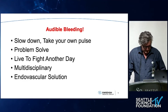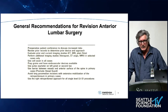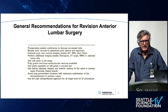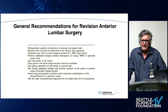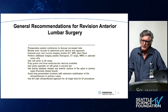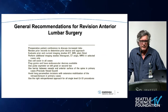If you're going to do revision anterior lumbar surgery, make sure you plan adequately. Think about putting in ureteric stents. Consider an endovascular wire in the left iliac vein. Have blood available and use a cell saver. Make sure the anesthesiologist knows what you're doing. Planning ahead is really going to avoid a lot of these complications.